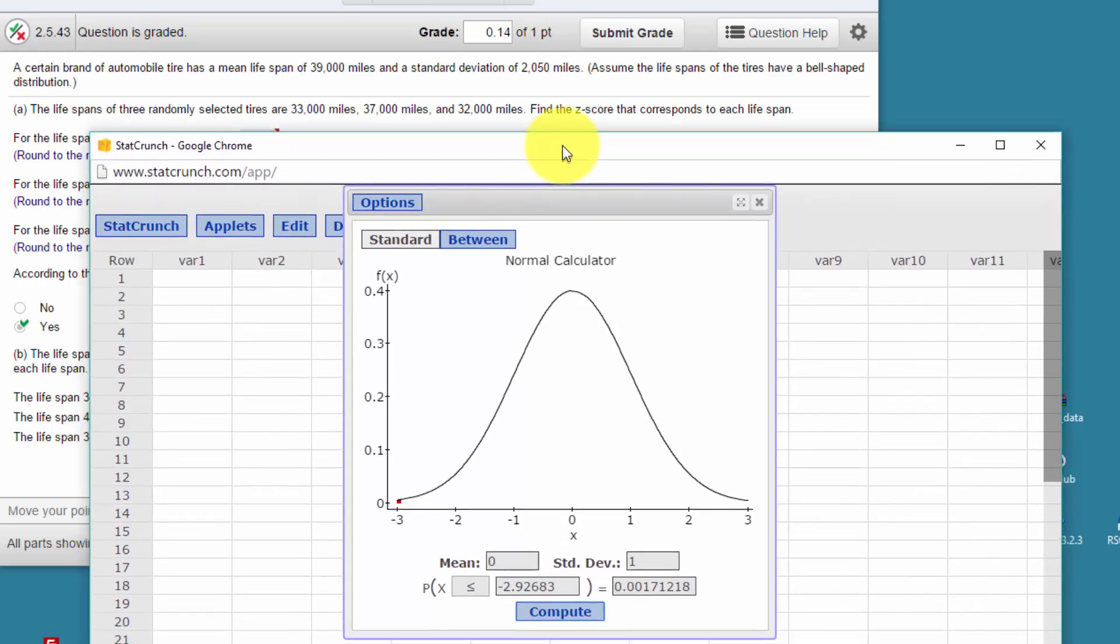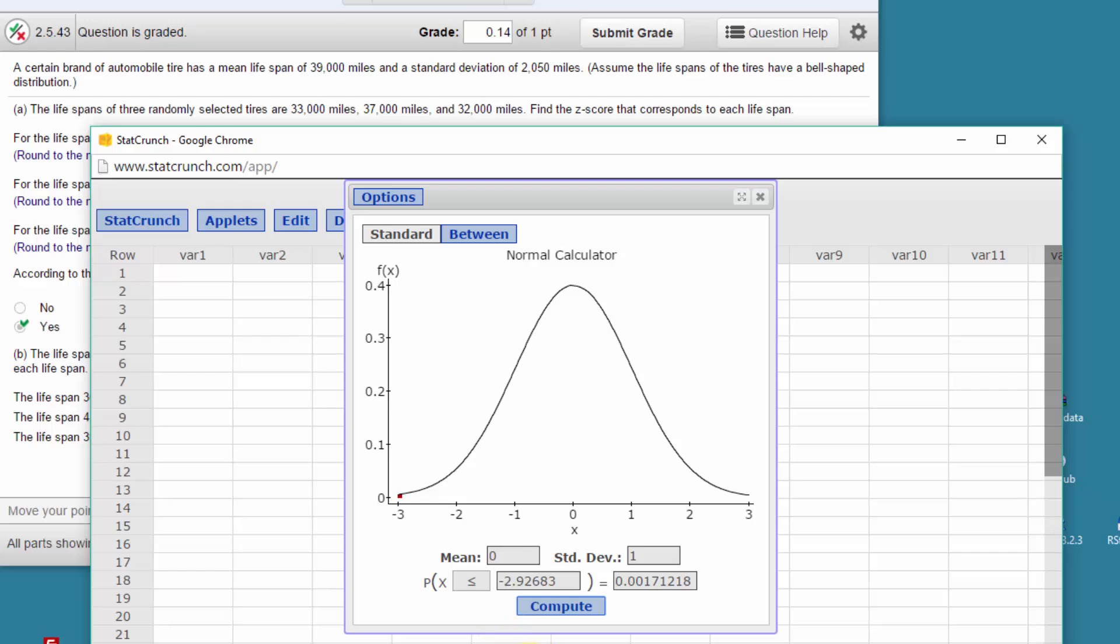So you just replicate that with each of the three, remembering that we have to put in the population mean first, population standard deviation, put in the x value, get the probability, copy that probability to the clipboard.